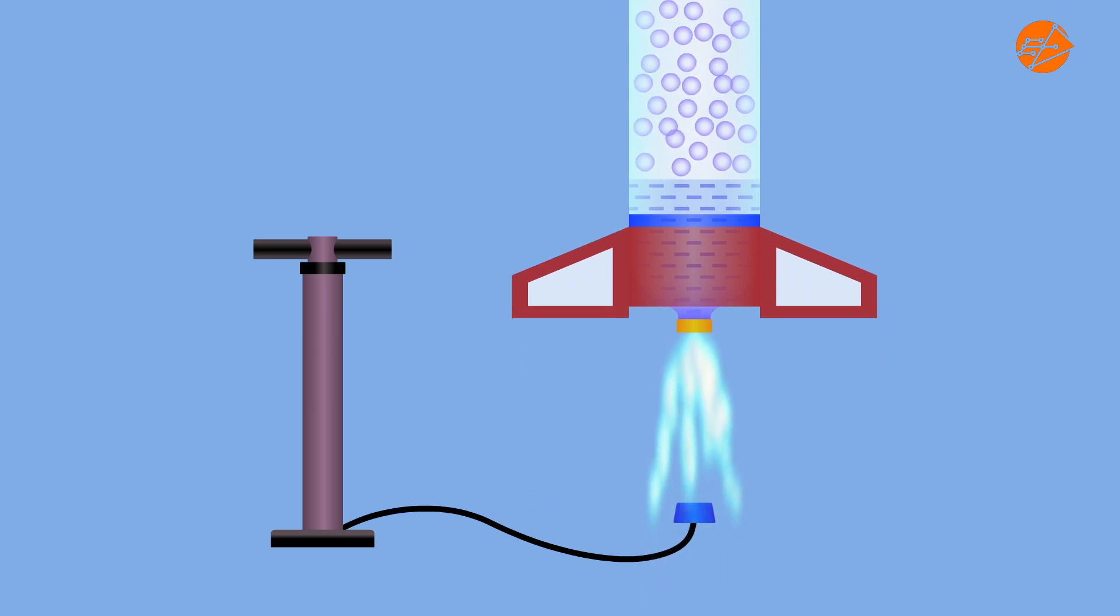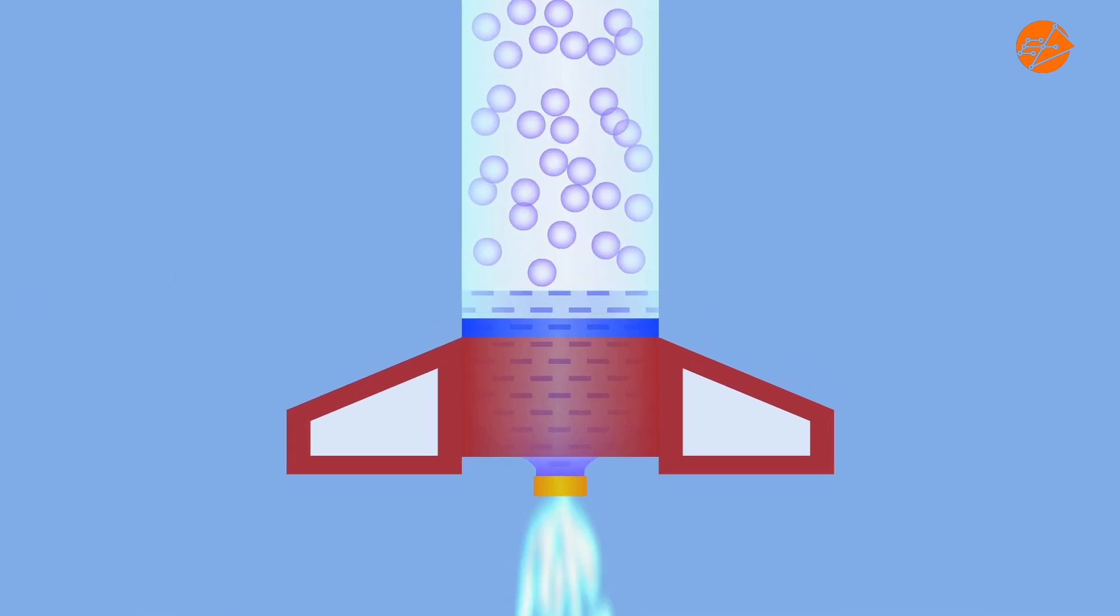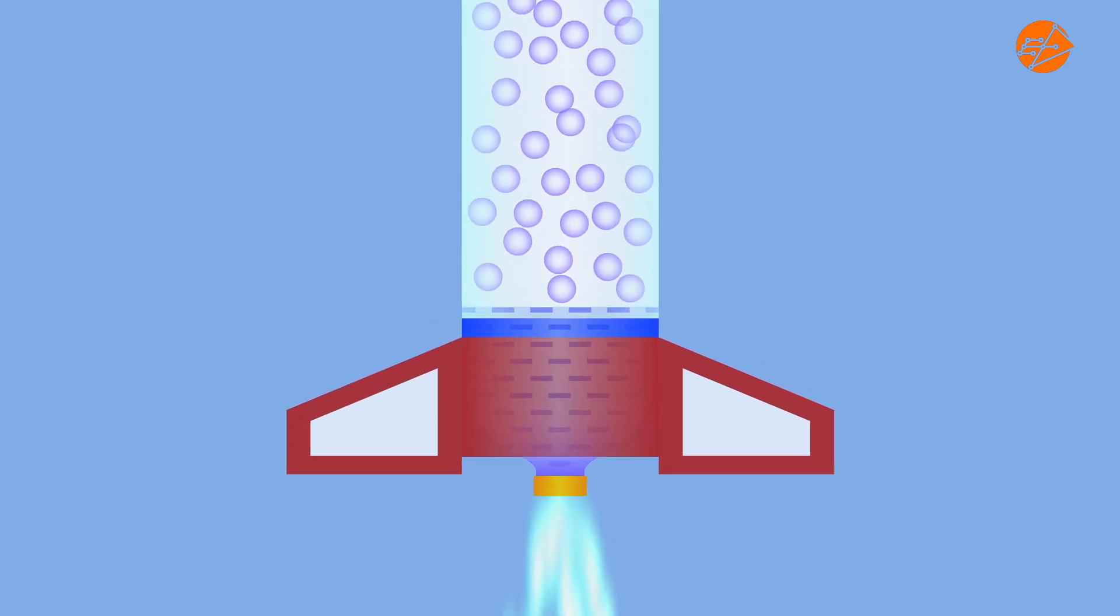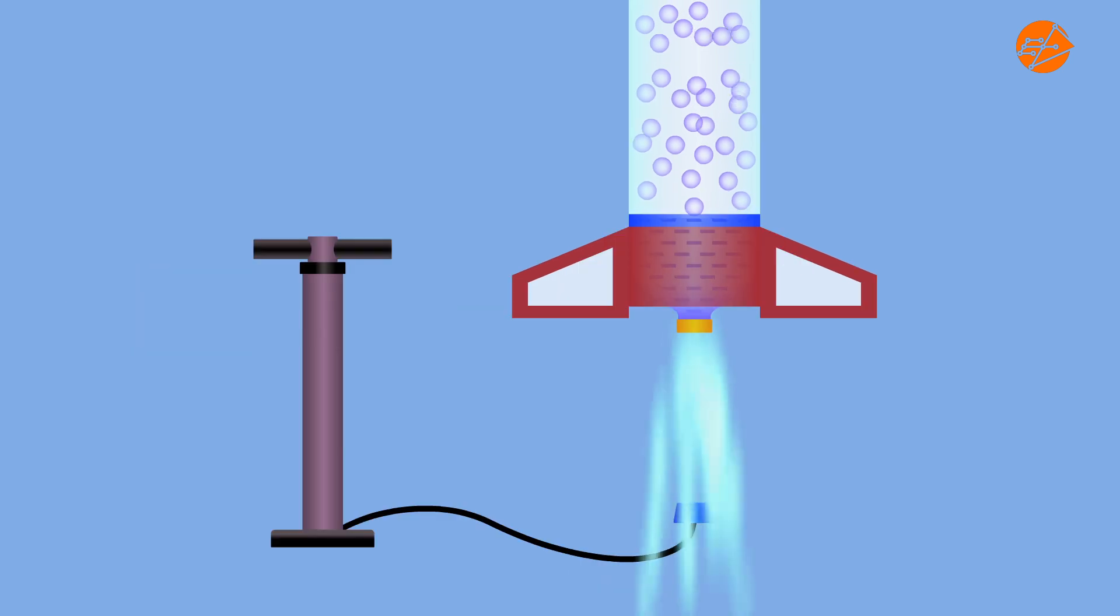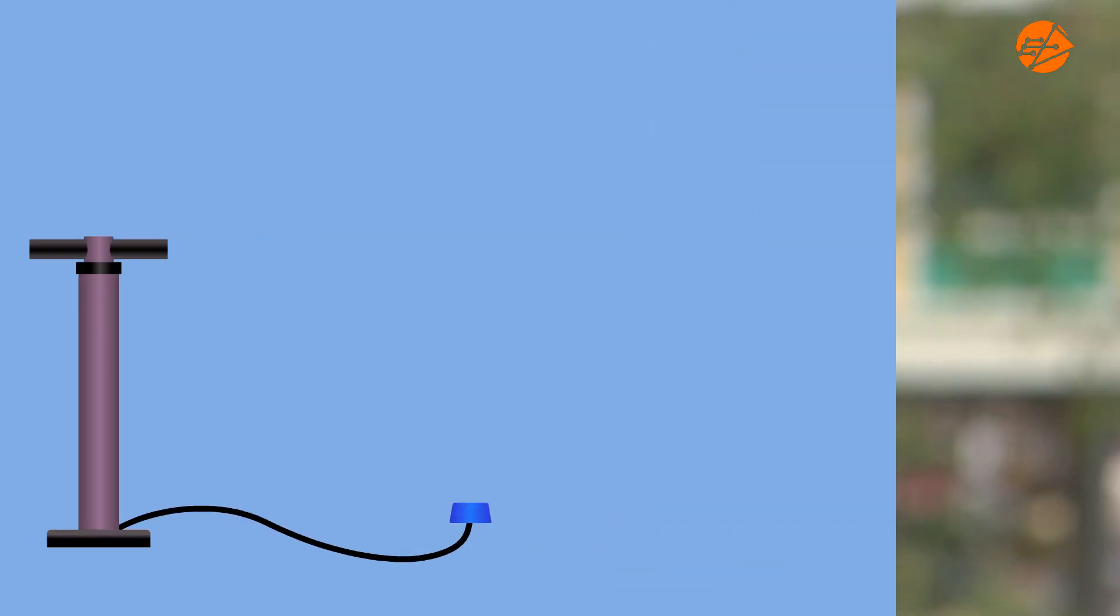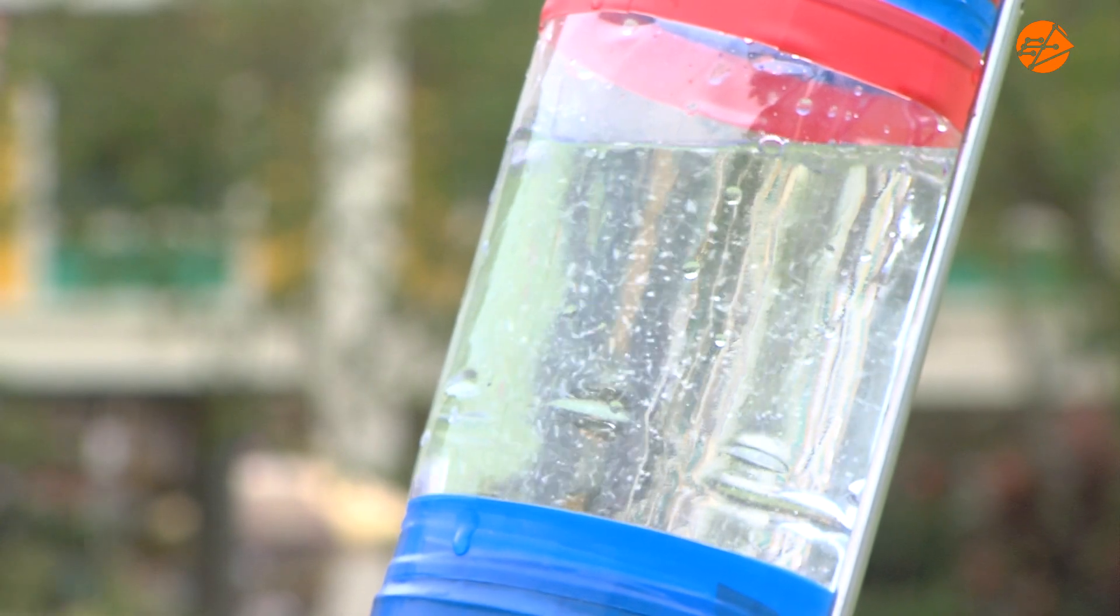When Mr. Yap releases the catch of the bottle, all of this stored potential energy is released, forcing water out of the bottle. Whoosh! This causes the rocket bottle to lift off.